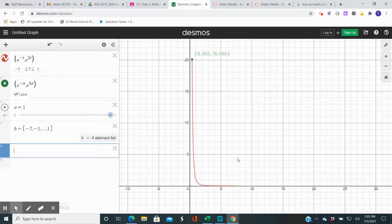We're taking a look at number 31, use a graphing utility to graph the curve represented by the parametric equations and indicate the orientation of the curve. So the parametric equations are x is equal to e to the negative t and y is equal to e to the 3t.